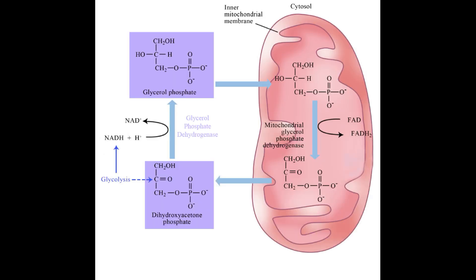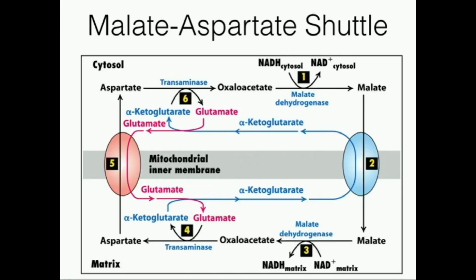In the electron transfer chain, NADH and FADH2 need to enter the inner mitochondrial membrane. The glycerophosphate shuttle takes NADH from the conversion of dihydroxyacetone phosphate into glycerol phosphate into the mitochondria, where mitochondrial glycerol phosphate dehydrogenase converts it, producing FADH2. The malate-aspartate shuttle works by converting aspartate in the cytosol to oxaloacetate via transaminase. Since oxaloacetate cannot enter the mitochondrial membrane, malate dehydrogenase converts it to malate using NADH, which is then transported into the mitochondria and converted back to oxaloacetate.